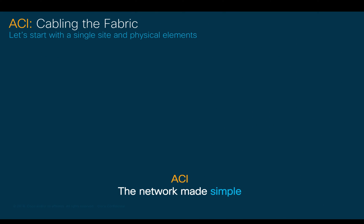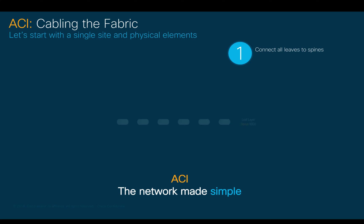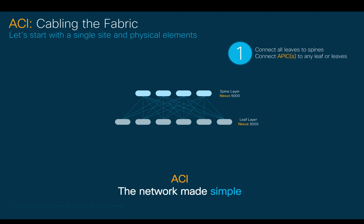After understanding the elements of an ACI fabric, it's time to cable them. The objective of this module is to have all leaves connected to all spines. Notice there is no connectivity between spines or between leaves in ACI, in order to allow layer 2 equal-cost multipathing within the fabric using VXLAN. The other objective is to connect the physical APECs to any leaf or leaves to allow automatic fabric discovery. If you will use virtual APECs, set up the physical APECs first as shown here.